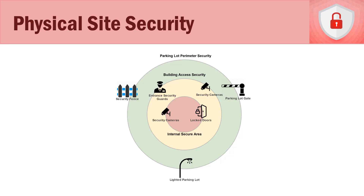Now let's talk about these controls from the perspective of their type. Are any of these a preventative access control measure? Remember, a preventative measure prevents an action — in this example, preventing somebody from gaining access to our internal building and secure area.